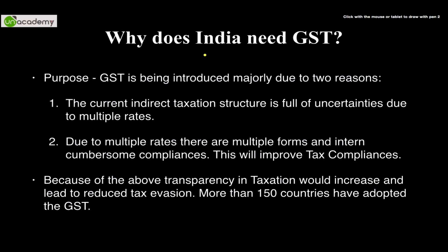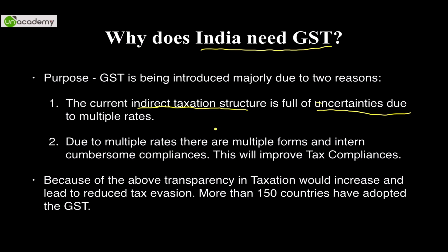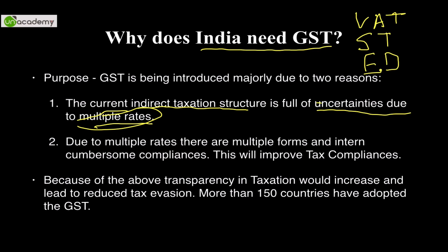Why does India need something like GST? The current indirect taxation structure is full of uncertainties due to multiple rates. Right now we have many rates — at the state level we have VAT, at the central level we have service tax, central excise duty, surcharge on excise duty, cesses on central taxes, customs duty, etc. All these taxes carry multiple rates, and the more the number of taxes, the more the forms. All these taxes would be abolished and one taxation structure — GST — would exist, reducing the multiplicity of rates.